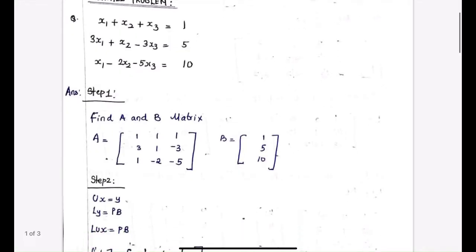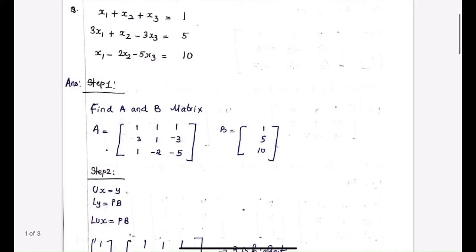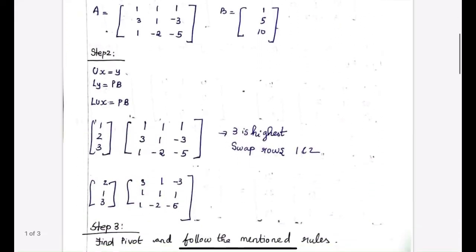The first step is that we need to find the A and B matrices. Finding the A and B matrices is pretty simple. The A matrix is just the coefficients of those elements on the left hand side. So we have 1, 1, 1, 3, 1, -3, 1, -2, -5 and so on. The B matrix is just the elements on the right hand side. So now we have the A and B matrices.